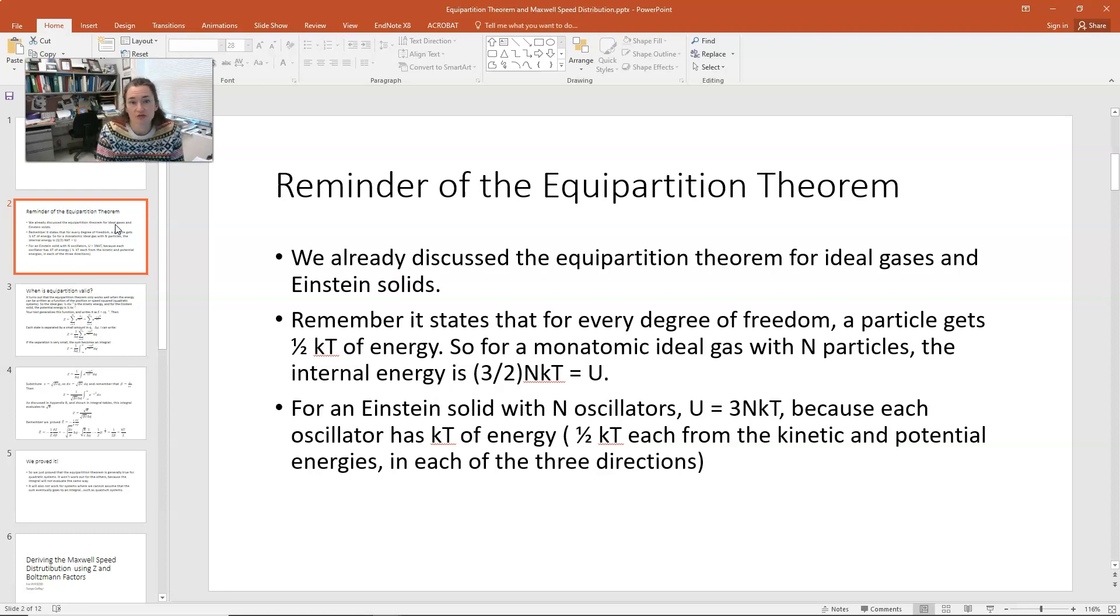We've also talked about it in the context of an Einstein solid with n oscillators. You get kt over 2 each for kinetic and potential energy in each direction, which, when you sum over all the degrees of freedom, would give you 3 kt total for one particle, and 3 n kt for the total internal energy.